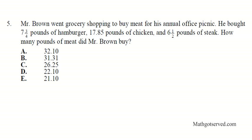Let's move on to question number 5. It says, Mr. Brown went grocery shopping to buy meat for his annual office picnic. He bought 7 3/4 pounds of hamburger and then 17.85 pounds of chicken and 6.5 pounds of steak. How many pounds of meat did Mr. Brown buy? So we're just going to add all the fractions together. So we're going to add 7 3/4 plus 17.85 and 6 and a half.